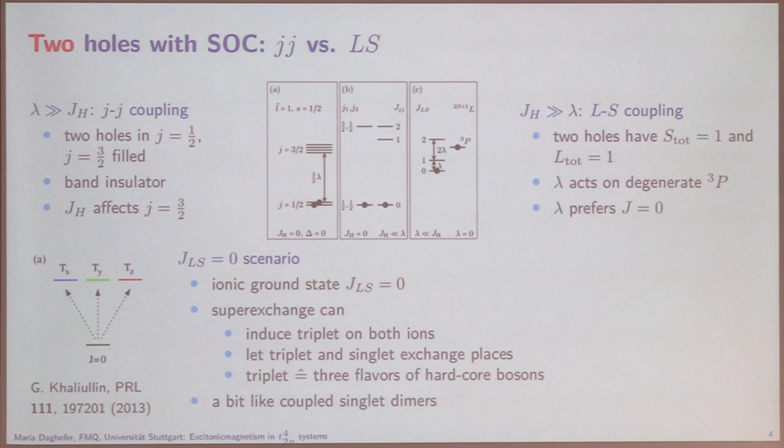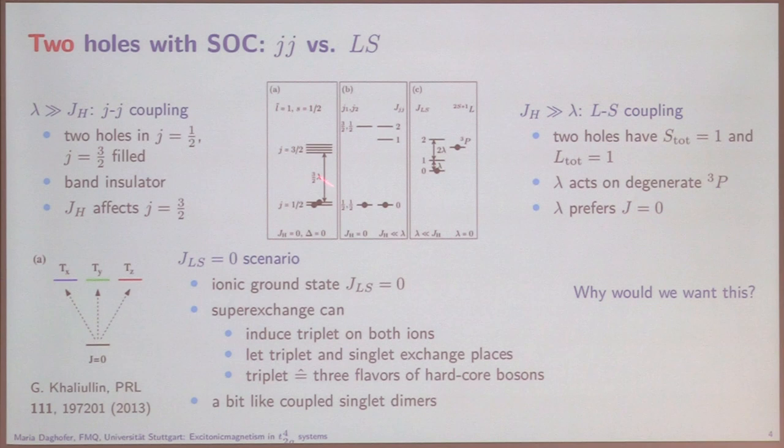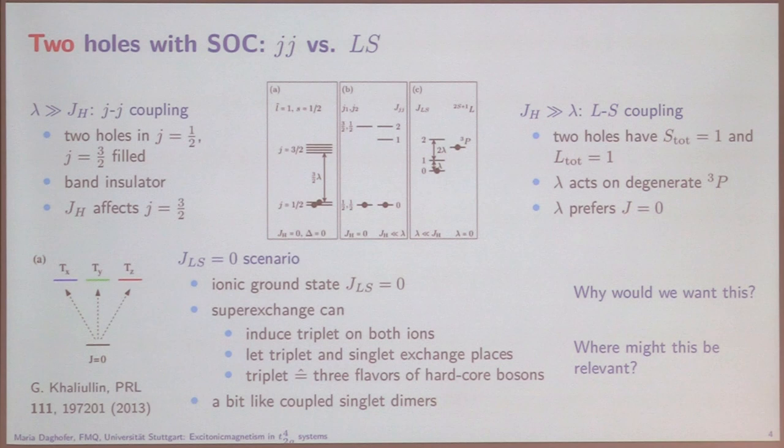The two things I want to talk about: first, why would we want this — I'll talk about a story we found in such a system where the triplet excitations on the honeycomb lattice tend to become topologically non-trivial very easily. And second, where might this be relevant — I'll come back to the square lattice, because there is a compound that is better understood, where we can make more thorough calculations.